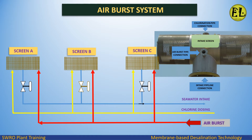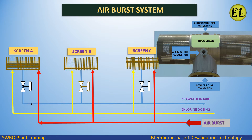Screens are made of copper and nickel alloy wedge wires with a clearance of about 3 mm. Both ends of the screens can be opened by hinged covers for cleaning purposes, also from inside. The screens have connections for chlorination and airburst.